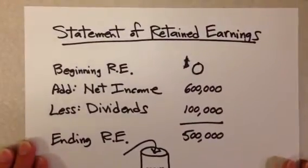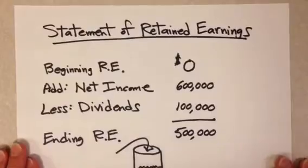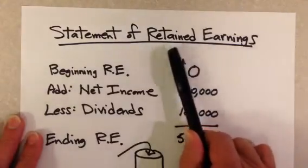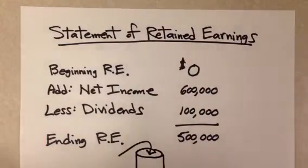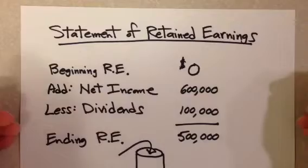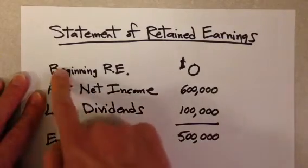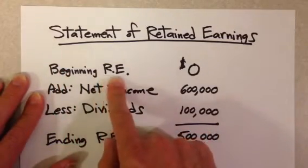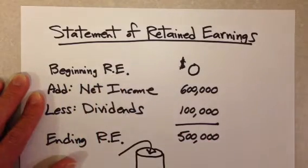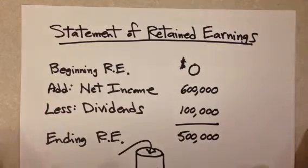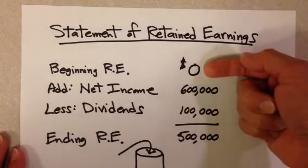The next statement is the statement of retained earnings. You'll see excellent examples of these financial statements in your textbook. When we look at retained earnings, this is an important word — retained. What does retained mean? It means what we've kept. Retained earnings are earnings that our company is keeping or hanging on to. The typical retained earnings statement will start off with the beginning retained earnings balance. In this case, I'm going to assume we're looking at a brand new company — this is the company's first year, so the beginning amount in the pot is zero.